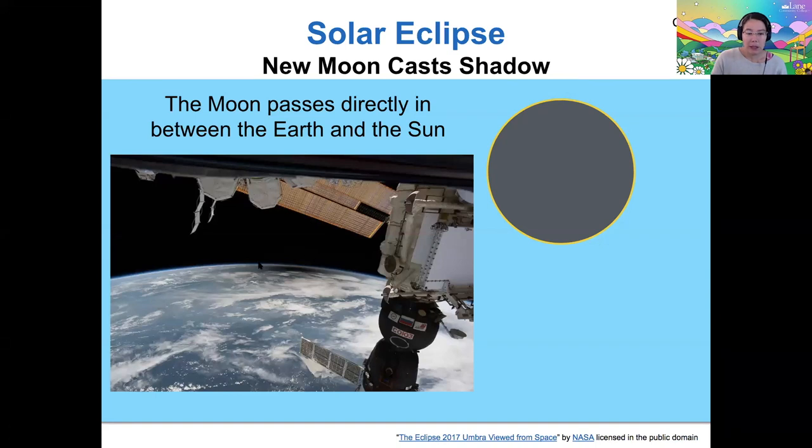If we look at the shadow, it doesn't touch everywhere and it's also not deepest everywhere. There are places near the edge of the shadow which don't experience full darkness, and places toward the center of the shadow do experience full darkness. The location of where that shadow is on earth is going to change because the earth is rotating underneath the shadow.